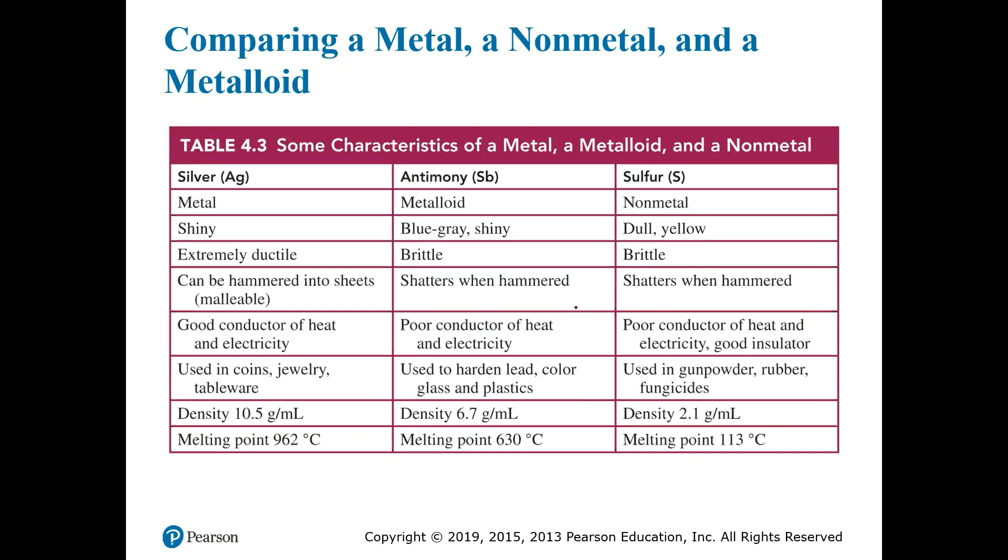Here we have a chart that just summarizes some of these properties with representative examples of the elements. Silver is a good representation of a metal, antimony is a good representation of a metalloid, and sulfur is a good representation of a non-metal. And so you can review their typical properties here.